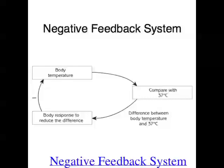To achieve homeostasis, a special type of stimulus response model called a negative feedback system is used. A negative feedback system is a system where the response, or an organism's response, is something which reduces the effect of the original stimulus. Like all stimulus response models, a negative feedback system basically involves a stimulus, a receptor, a control center, an effector, and a response.